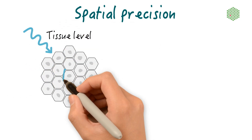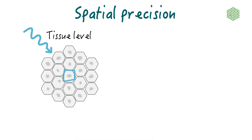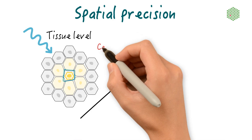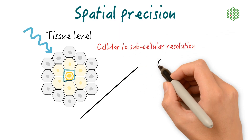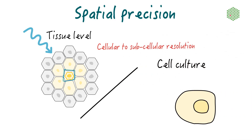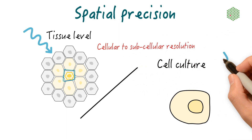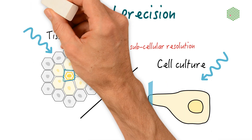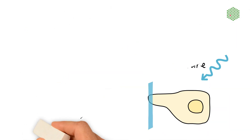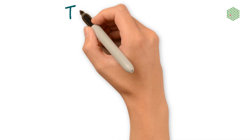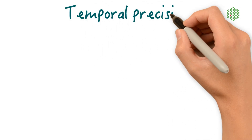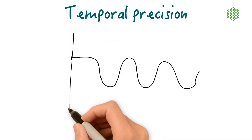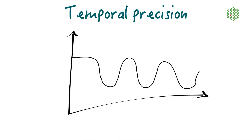Since we use light to trigger the system, we can, for example, specifically activate individual cells in a tissue. In certain experimental setups, we can even achieve subcellular precision, such as a specific induction of cell protrusions at defined sites. Just as important as the spatial precision is the fact that optogenetics enables us to activate a system at precise time points to investigate dynamic biological systems.